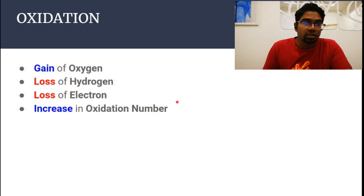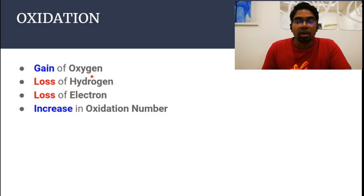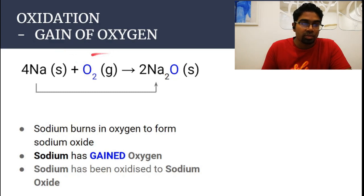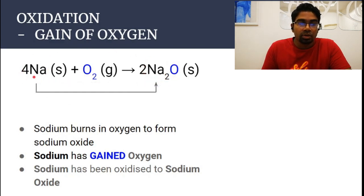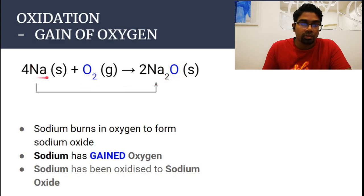Oxidation can be defined as the gain of oxygen. For example, sodium burns in oxygen to form sodium oxide. When sodium burns with oxygen to form sodium oxide, you can look at the left side of the equation. Sodium has become sodium oxide — it has gained oxygen. So we say that sodium has been oxidized to sodium oxide.